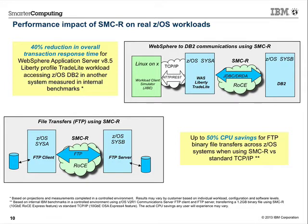Chart 10 highlights performance benchmarks from early testing using actual IBM middleware — macro-level, multi-tier workloads. The first example is WAS to DB2. All numbers compare RoCE to standard TCP/IP. In the first case, a transaction from a remote Linux on X client using standard TCP/IP into WAS Liberty had its back-end DB2 connectivity replaced from TCP/IP to RoCE.